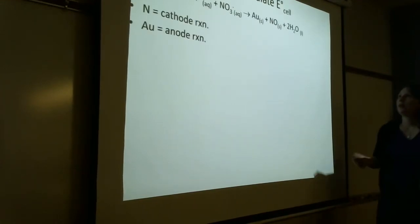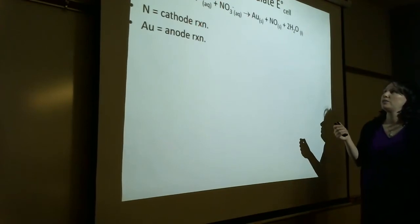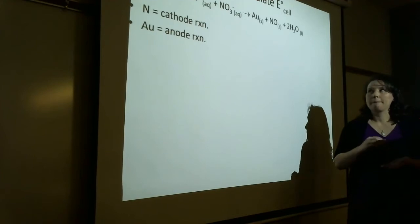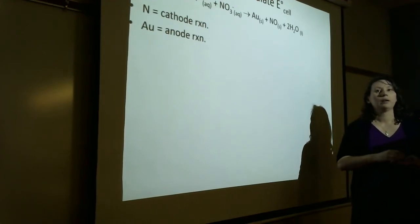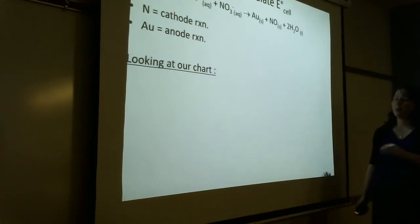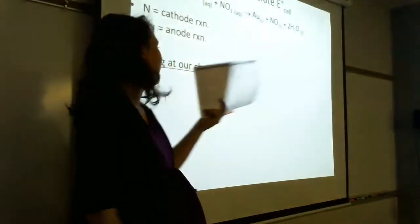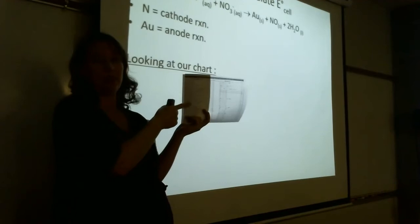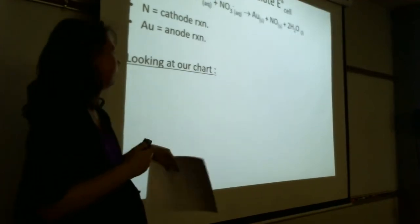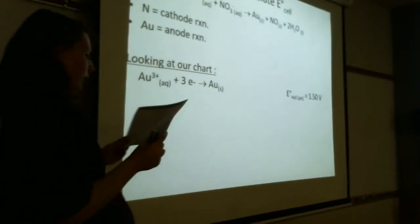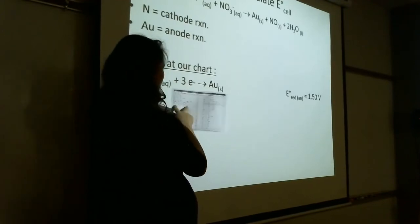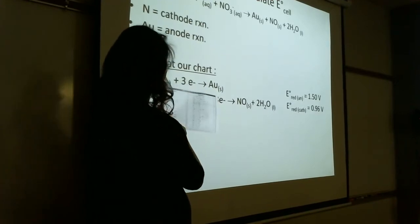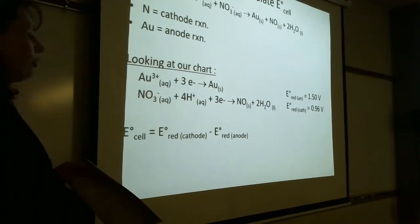Now we calculate E°cell. The nitrogen process is the cathode and the gold process is the anode. How do you know? Red cat — reduction occurs at the cathode. From our chart, we get 1.5 volts and 0.96 volts. Cathode minus anode gives us E°cell = negative 0.54 volts. Just by looking at the negative E-cell, we should already be able to predict that this reaction is non-spontaneous.